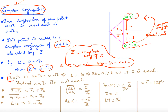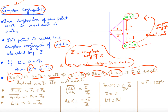First property: z equals z-bar if and only if z is real. To prove it: z equals z-bar means a + iota b equals a minus iota b, so 2b equals 0, meaning b equals 0, which means z is purely real. The converse is straightforward. Geometrically, if z is on the real axis, reflecting it across the real axis gives the same point.